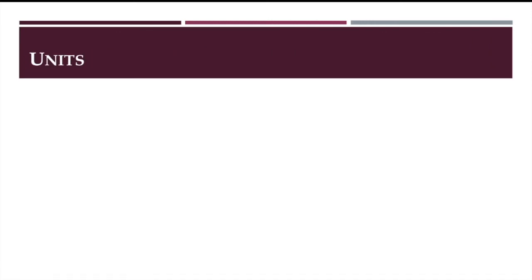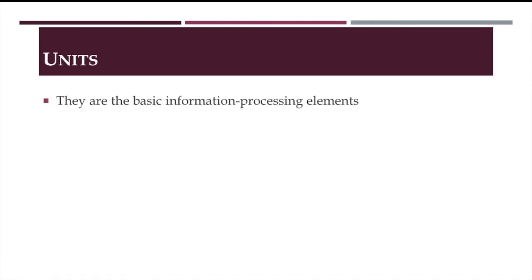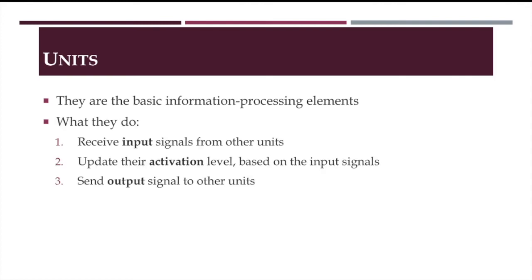Let's take a closer look at the units. The neuron units are the basic information processing elements. They receive input signals from other units, update their activation level based on the input signals, and send output signals to other units.